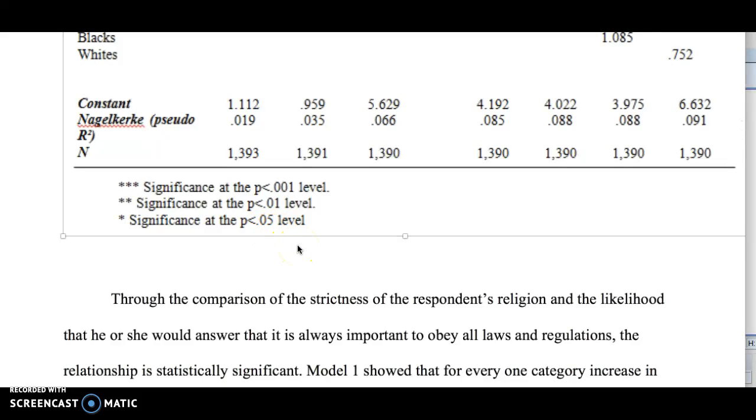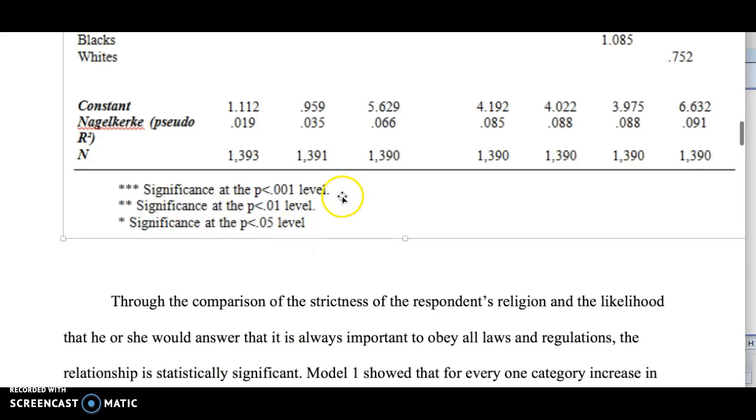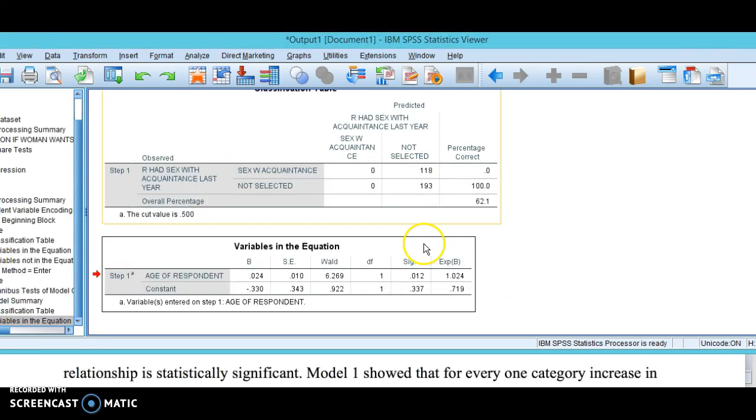Remember with significance levels you look at if it's at that level or lower. In this equation we got 0.012—that's a nice low level for the age of the respondent predicting whether they had sex with an acquaintance last year, yes or no.